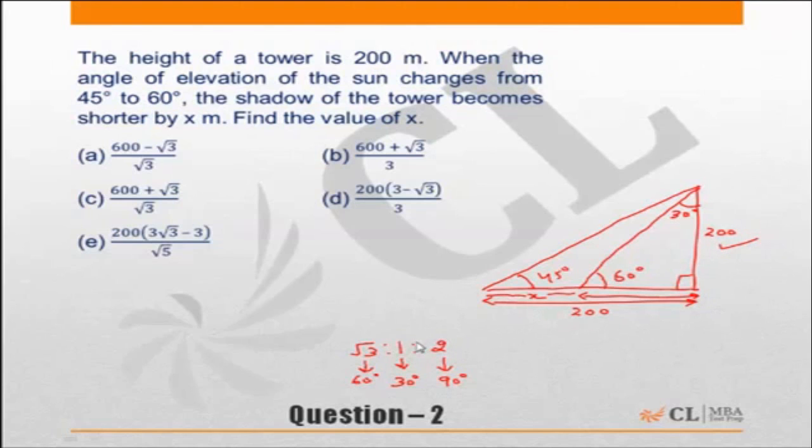So if we consider that we have 200 as the perpendicular, that means the side opposite to 60 degrees, so 200 is root 3. We need to find out the base opposite to 30 degrees. Let's say this is Y, so Y equals 200 by root 3.